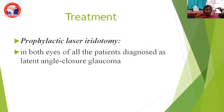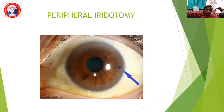Coming to treatment: in both eyes, we do prophylactic laser peripheral iridotomy in all patients diagnosed as latent or primary angle closure glaucoma suspect (PACS). This picture shows peripheral iridotomy, where a hole is made in the peripheral iris, creating a pathway for aqueous to flow so that iris bombé formation does not happen. The patient will have free flow of aqueous from the posterior chamber to the anterior chamber, preventing angle closure glaucoma.